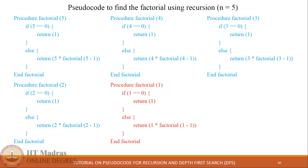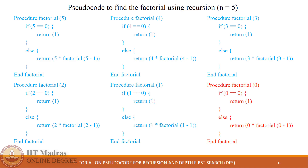The procedure call generated inside the else block calls factorial with parameter 0. This procedure call satisfies the base condition, since 0 equals 0, and returns 1 back to its original caller.